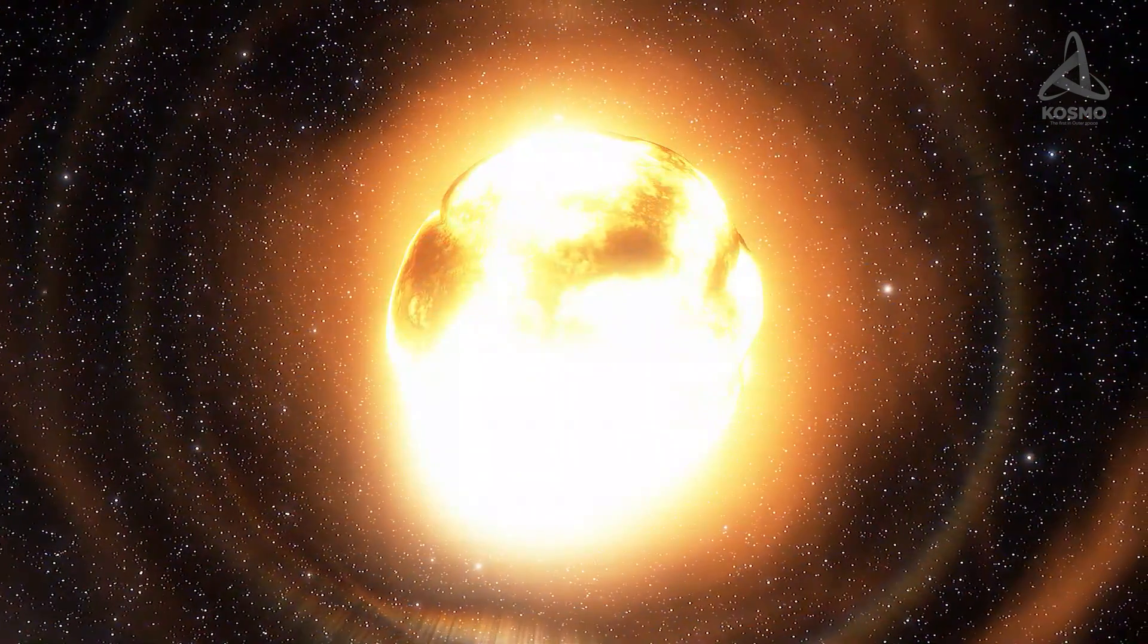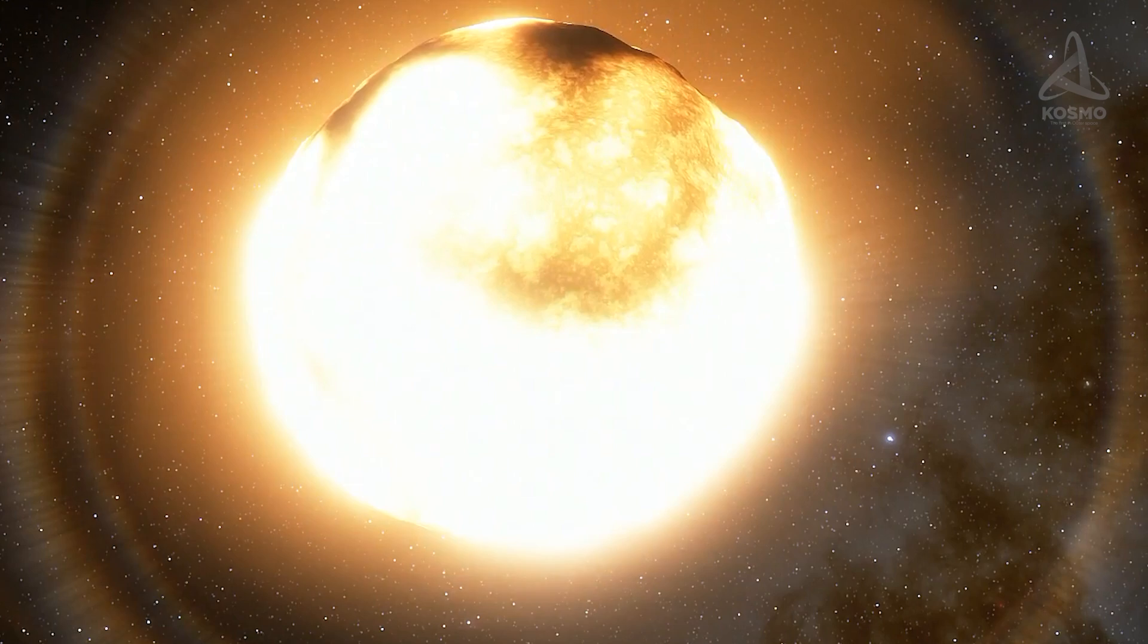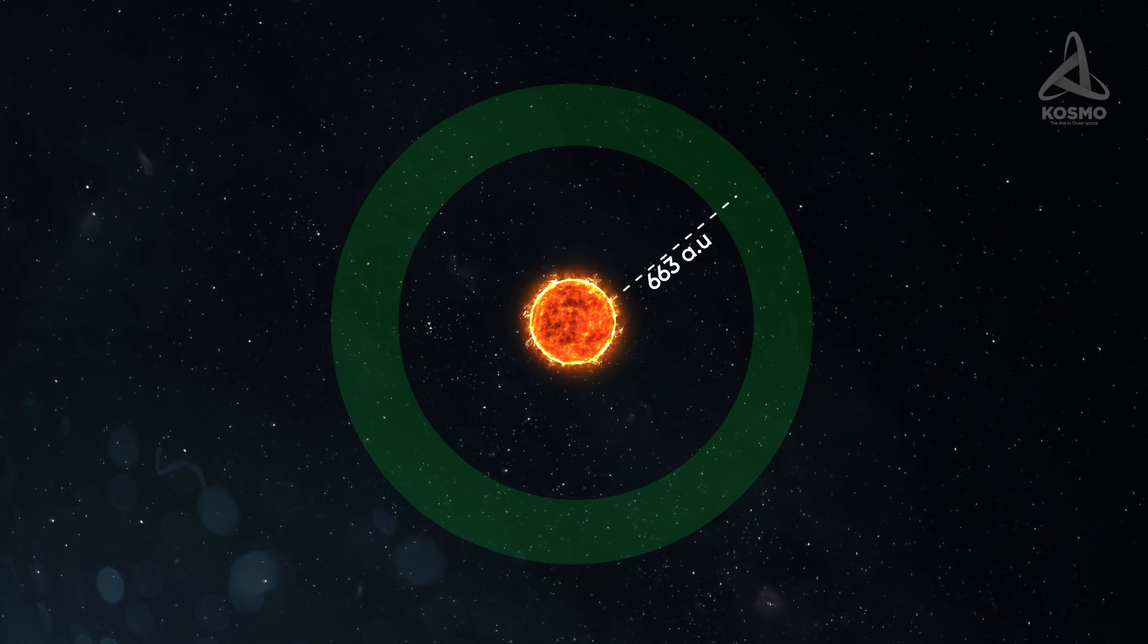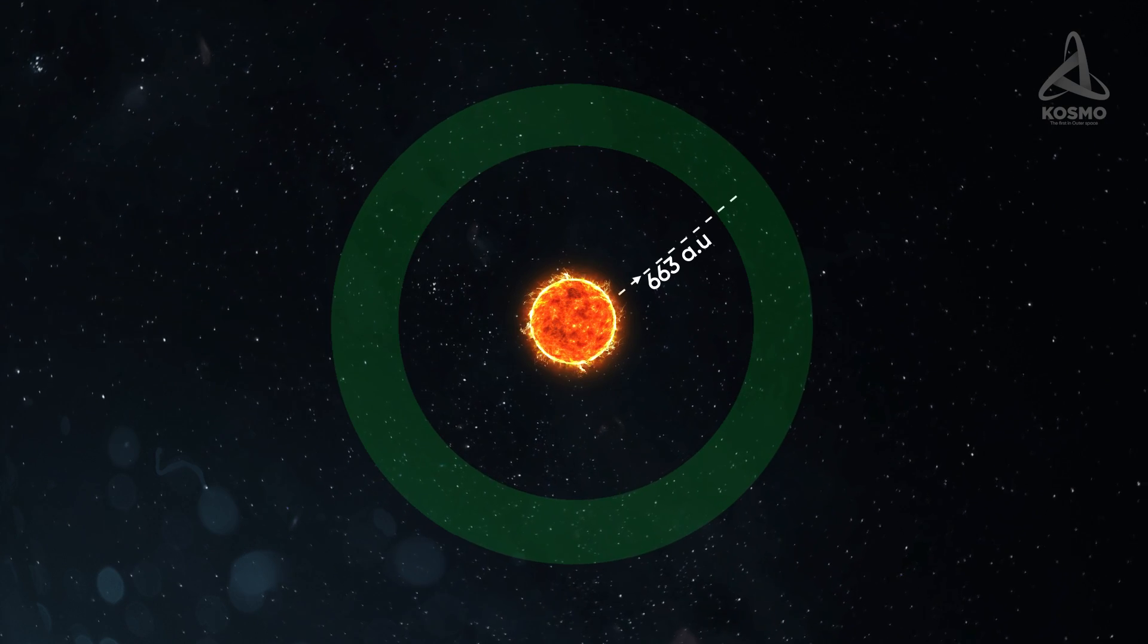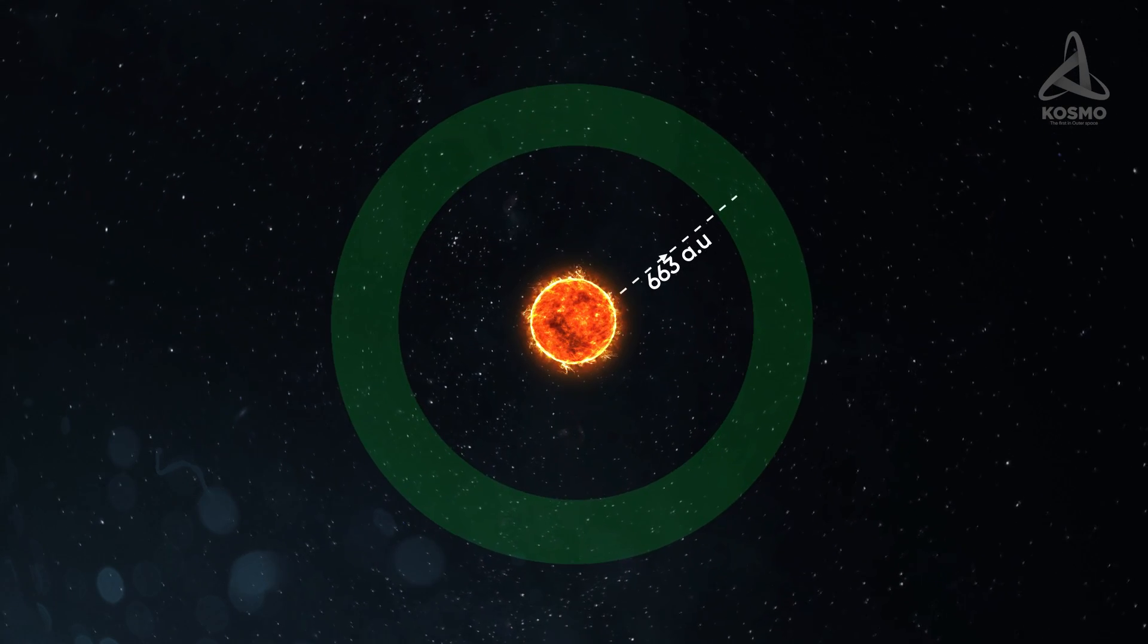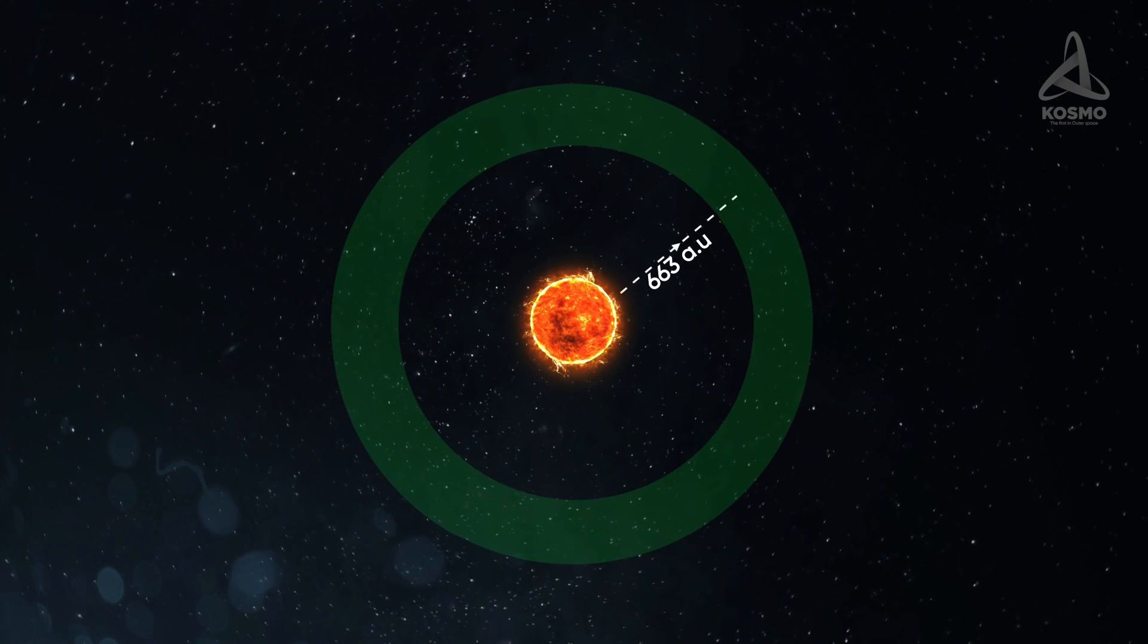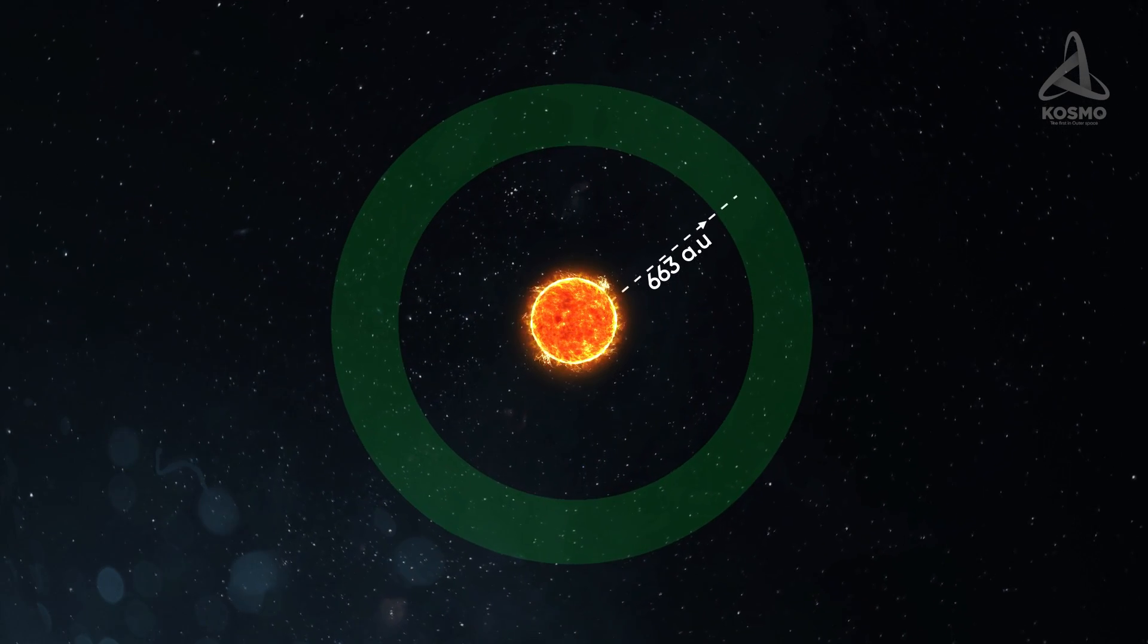Its middle should lie approximately 663 astronomical units away from the star's center, in other words, 20 times the distance from the center of the sun to Pluto's orbit. And as for the area of the habitable zone, it is expected to be 1 billion times that of the sun.